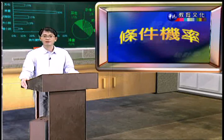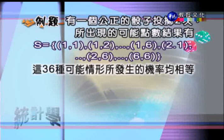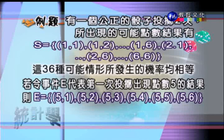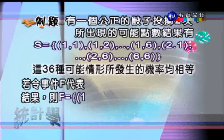接下來談條件機率，直接從一個例子說明。假設有一個公正的骰子投兩次，樣本空間從 (1,1) 到 (6,6) 共36種可能性。令事件 E 代表第一次投出點數5，E = {(5,1),(5,2),(5,3),(5,4),(5,5),(5,6)}，P(E) = 6/36 = 1/6。令事件 F 代表兩次點數合為6，F = {(1,5),(2,4),(3,3),(4,2),(5,1)}，P(F) = 5/36。